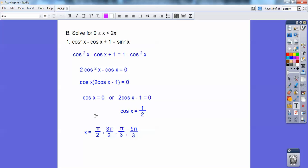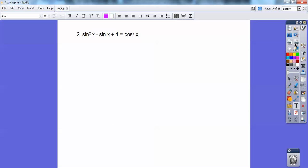Cosine of x equals zero at pi over two and three pi over two. And the cosine of x equals a half at pi over three and five pi over three. All right, so let's do this one here.